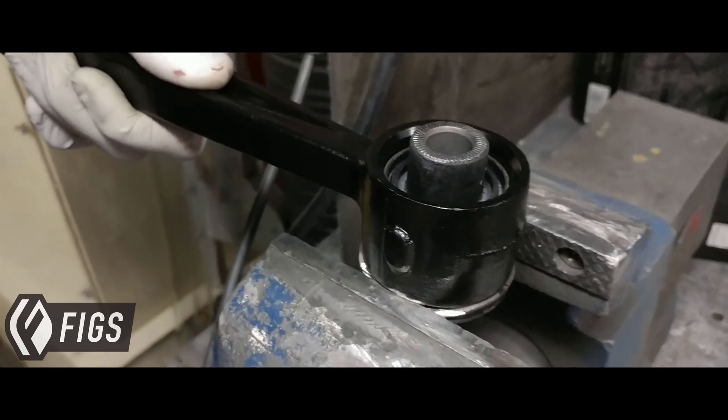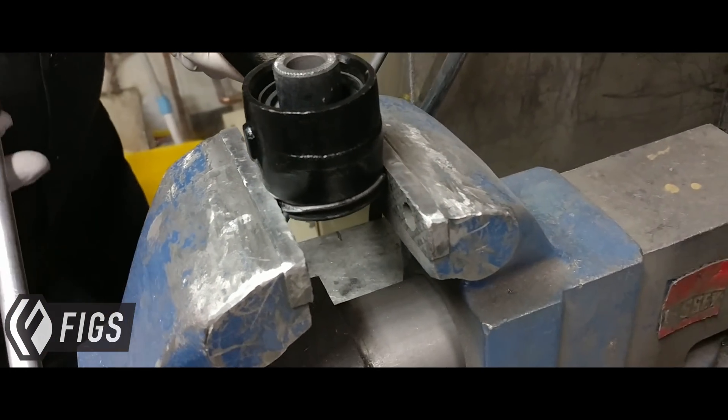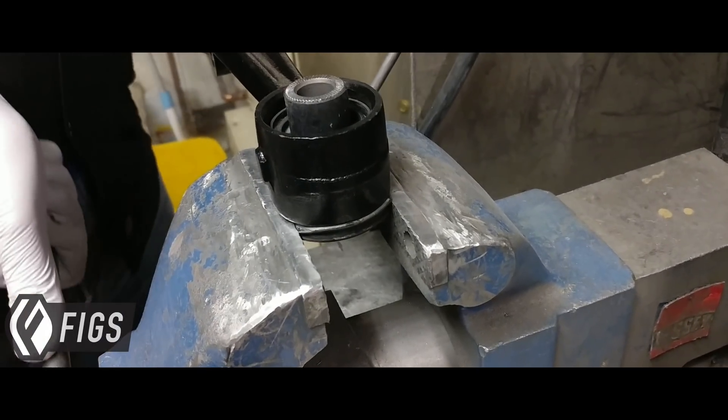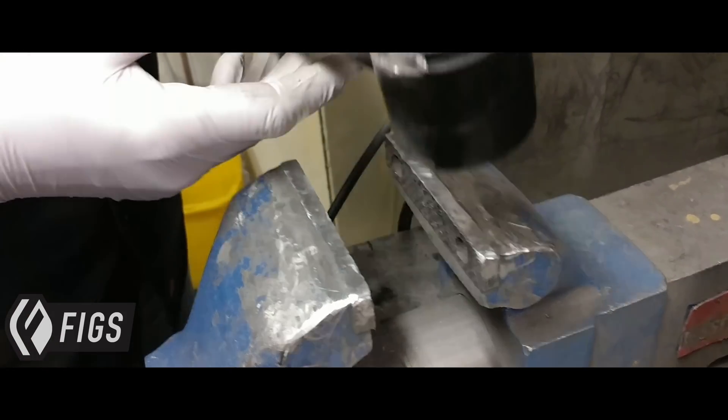Take it in the vise, get a little bite on that edge there. Make sure you're not on the arm, but you're just on the bushing cup. And you just squeeze those two things together until you've got enough of a platform to put on your press plates.